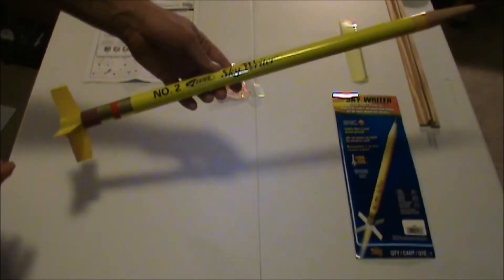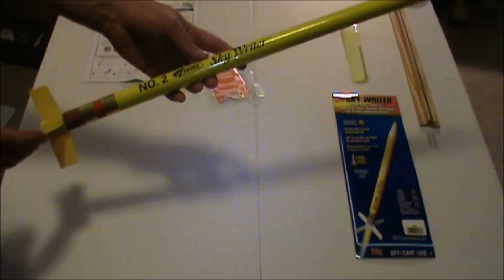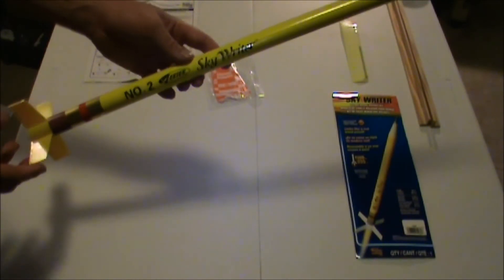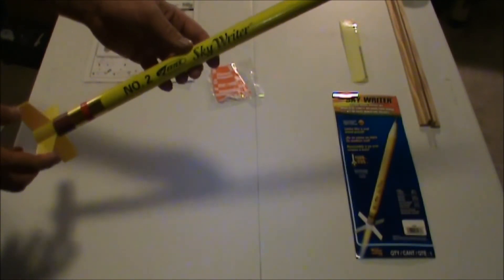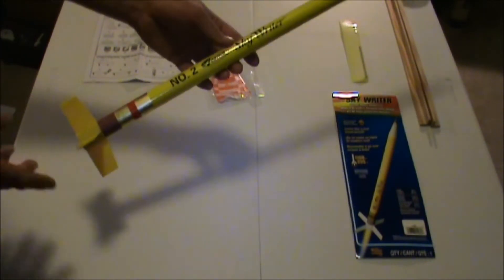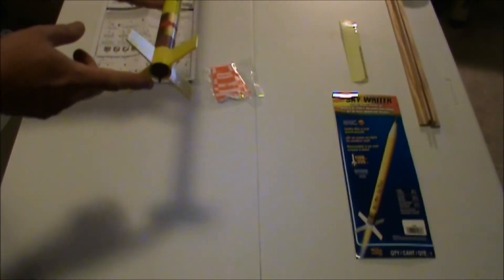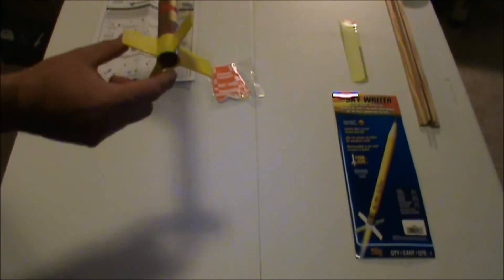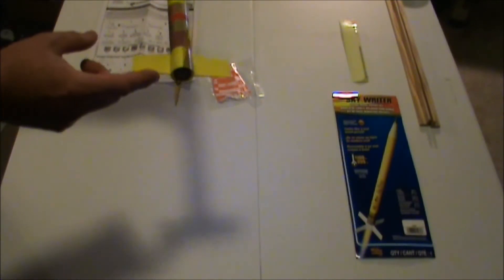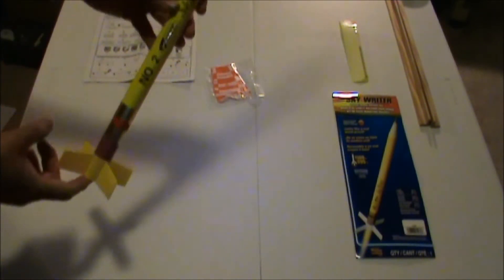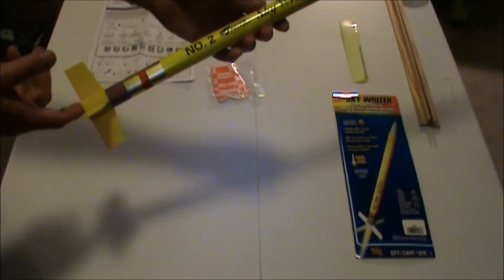One thing I did notice as well is it's just as tall as the Scorpion and the Mongoose that I have, which led me to believe maybe on my next one I'll go ahead and leave off the engine hook and use the Mongoose booster on this as well. I see no reason why this cannot be a two-stage rocket.